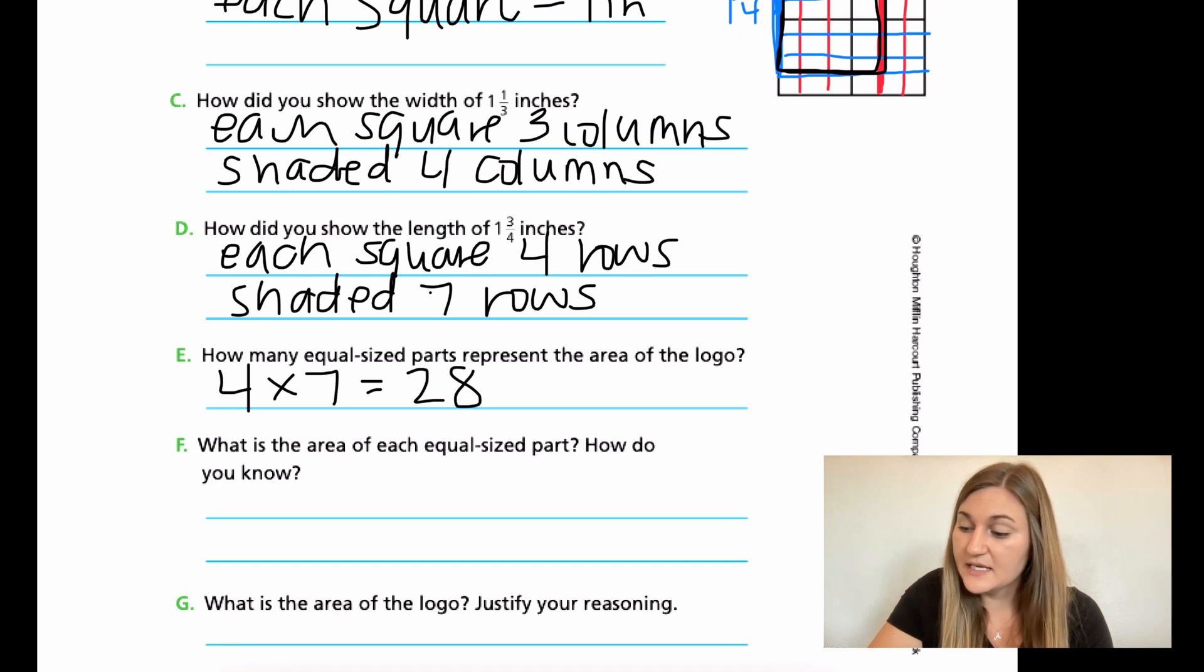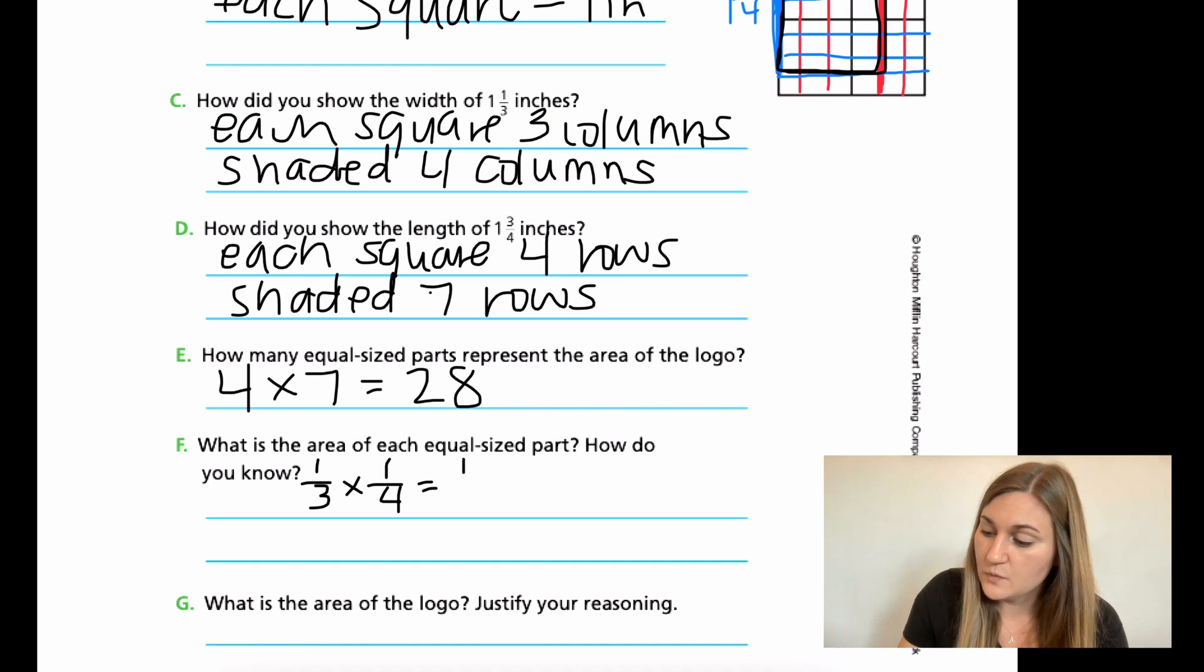And then for F, what is the area of each equal-sized part? So one of those squares inside of the bigger square, so each of those blue by red, how much is each square? Well, I know I made each column worth 1/3. And then I made each row 1/4. So I'm going to take my 1/3 and my 1/4, and that's going to be the area of one of those teeny tiny little squares. So I have my 1/3 times my 1/4. It's just like what we were talking about with the tiles in the previous lesson, but now we're just talking about squares that we created. So the area of each of those squares is going to be 1 times 1 is 1, and 3 times 4 is 12.